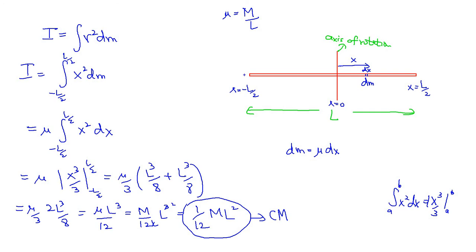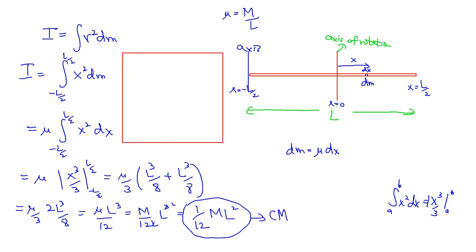Now if you want the moment of inertia around a different axis — for example, along one end of the rod — you can use the parallel axis theorem. The theorem states that if you know the moment of inertia about the center of mass, you can find it for any axis parallel to that center-of-mass axis.